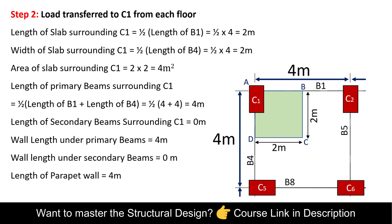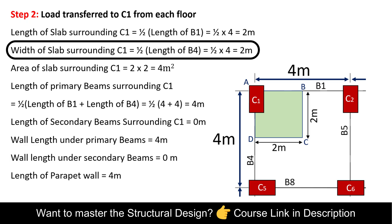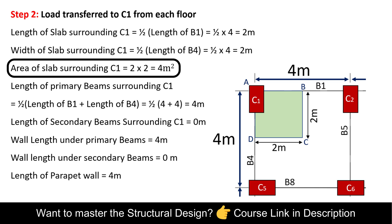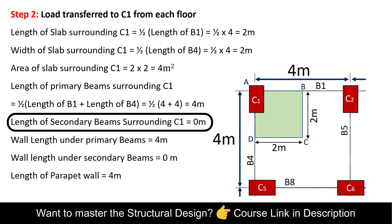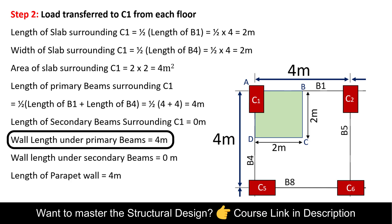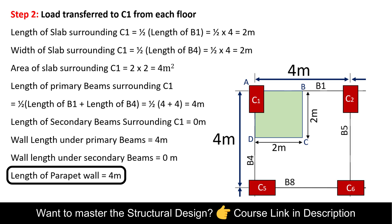In the second step, we calculate the load transferred to column 1 from each floor. The slab surrounding column 1 is 2 m x 2 m = 4 m². The total length of primary beams surrounding column 1 is half of B1 plus half of B4 = 4 meters. The length of secondary beams is 0, the wall length under primary beams is 4 m, wall length under secondary beams is 0 m, and the parapet wall length is 4 m.